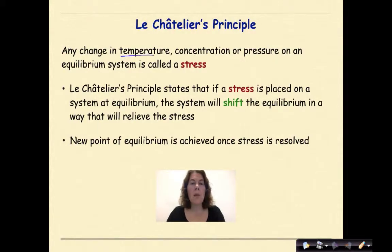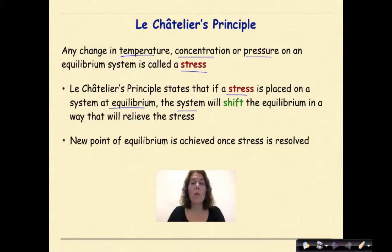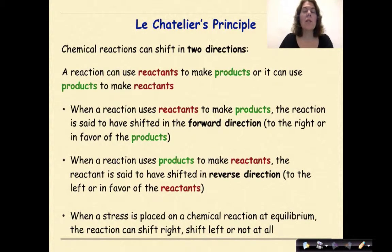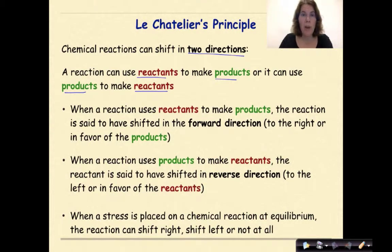Let's talk about Le Chatelier's principle. Any change in temperature, concentration, or pressure on an equilibrium system is called a stress. Le Chatelier's principle states that if a stress is placed on a system at equilibrium, the system will shift the equilibrium in a way to relieve that stress. A new point of equilibrium is achieved once the stress is resolved. Chemical reactions can shift in two directions: a reaction can use reactants to make products, or it can use products to make reactants — a reversible reaction.